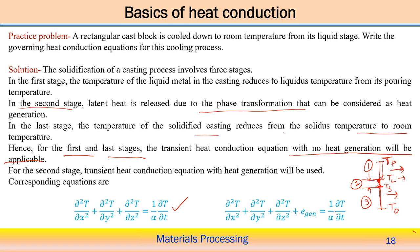When there is a release of latent heat — and in that case, the change of temperature between the liquidus and solidus temperatures — we have to consider the heat generation term. The heat generation term takes care of the release of latent heat due to the phase change. This is the same equation but including the heat generation term. If we solve this equation, we will be able to get the temperature distribution at this particular point.